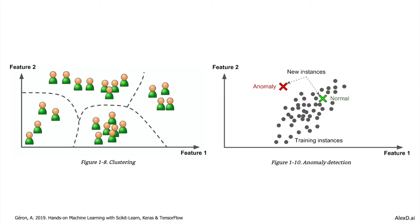Those are examples of unsupervised machine learning. The idea of unsupervised machine learning is that you don't know exactly what you want to get from your data. You want to find new patterns, new insights — and that's when you use this kind of machine learning.